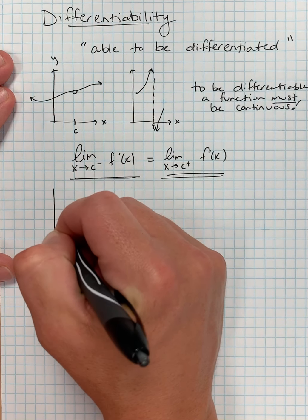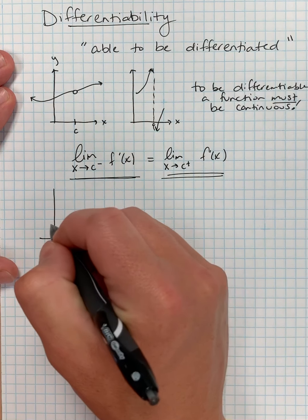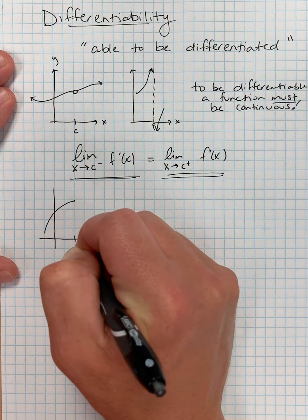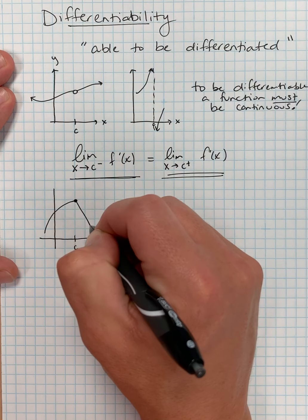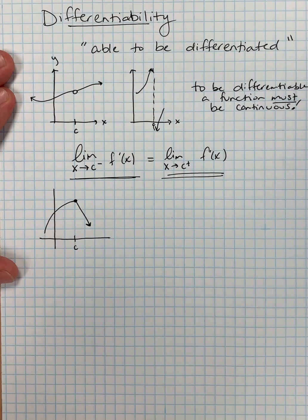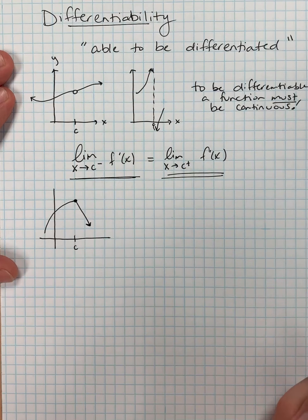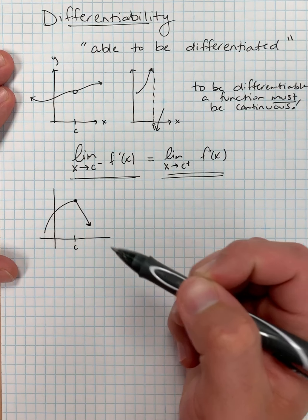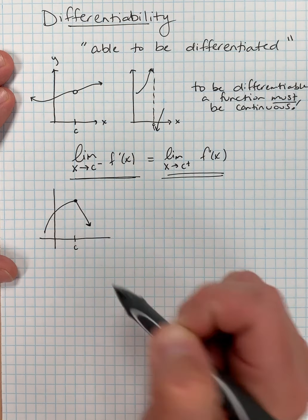Let's look at a non-example. An easy non-example is a piecewise function — maybe it looks parabolic up until x equals c, then breaks off into a linear function with a negative slope. This function is continuous, so it checks the first box. However, it is not differentiable, because the derivative from the left is not equal to the derivative from the right.